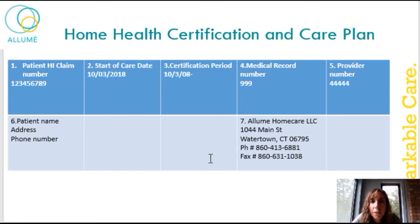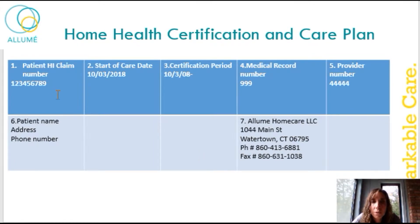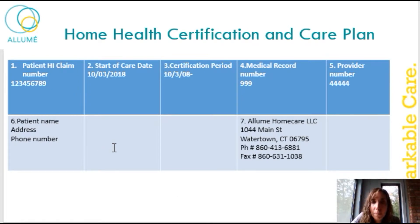At the top of your care plan it'll say 'Home Health Certification and Care Plan' and you'll see that there are numbers to each section. Those numbers correlate on the different pages of your care plan so that you know what to expect in what section. At the very top of the page and the subsequent pages, there is number one: the patient's HI claim number. Number two: the start of care date.